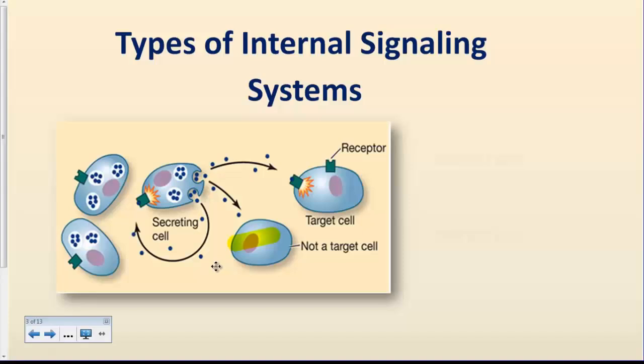So let's start with the type of chemical signals that we have in multicellular organisms, specifically in animals. There are three types of internal signals that we have in animals. The first type of signals are produced by cells and that are released by these cells to act on that same cell.